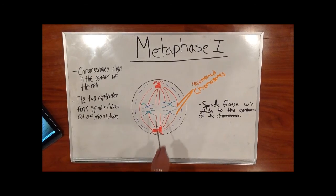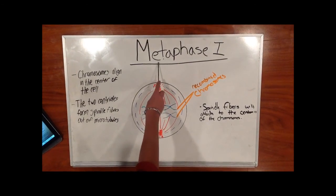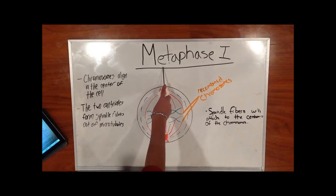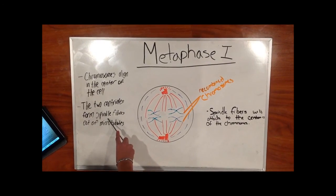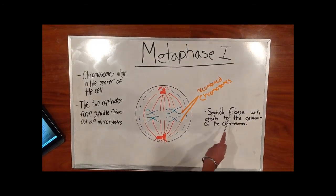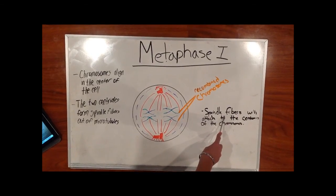Once the chromosomes are crossed over, they'll align at the center of the large cell. This is the beginning of metaphase 1. The nuclear membrane will split at this point. Two centrals form spindle fibers out of microtubules. Those spindle fibers will attach to the centromeres of the chromosomes. Each of the homologous chromosomes will be pulled towards a given pole.